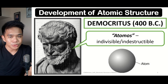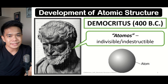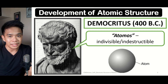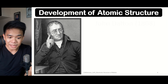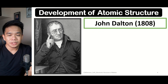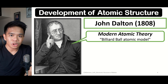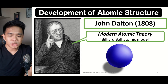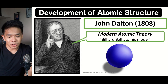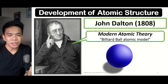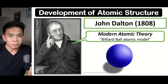After the time of Democritus, it was not until the early 1800s when another scientist attempted to describe the particles of matter. That scientist was John Dalton, who in 1808 formulated the modern atomic theory, in which he described the atom as a solid sphere — just like a billiard ball. Dalton's modern atomic theory is made up of different postulates in which he tried to explain the different properties of the atom.